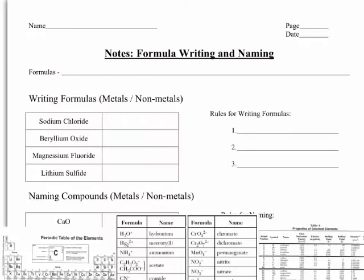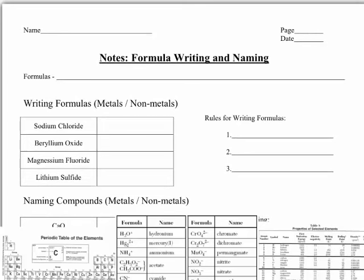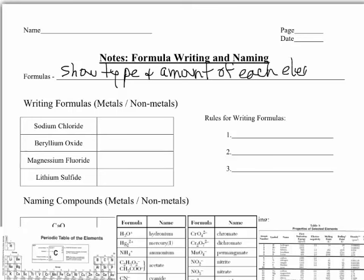The first thing I want to do is define formulas for you. Formulas show the type and number of each element in a compound.